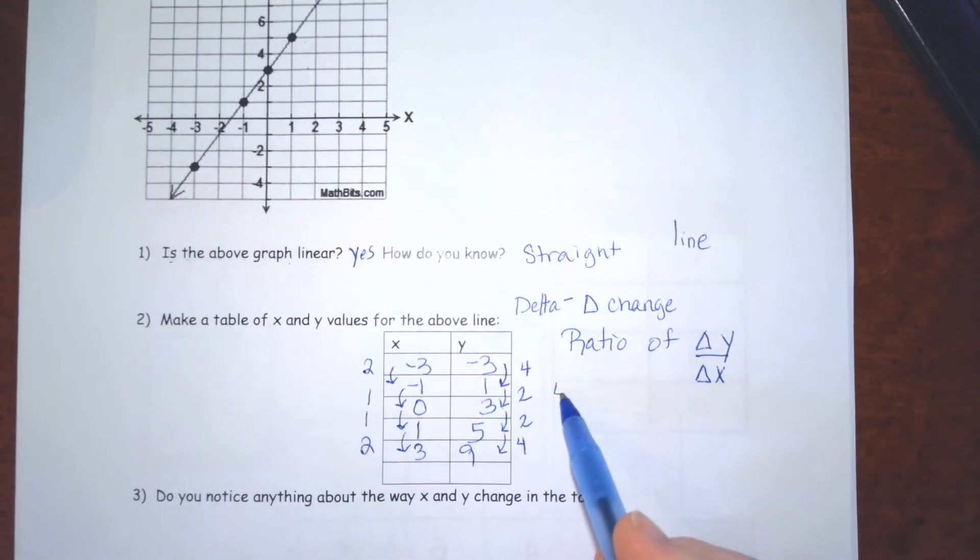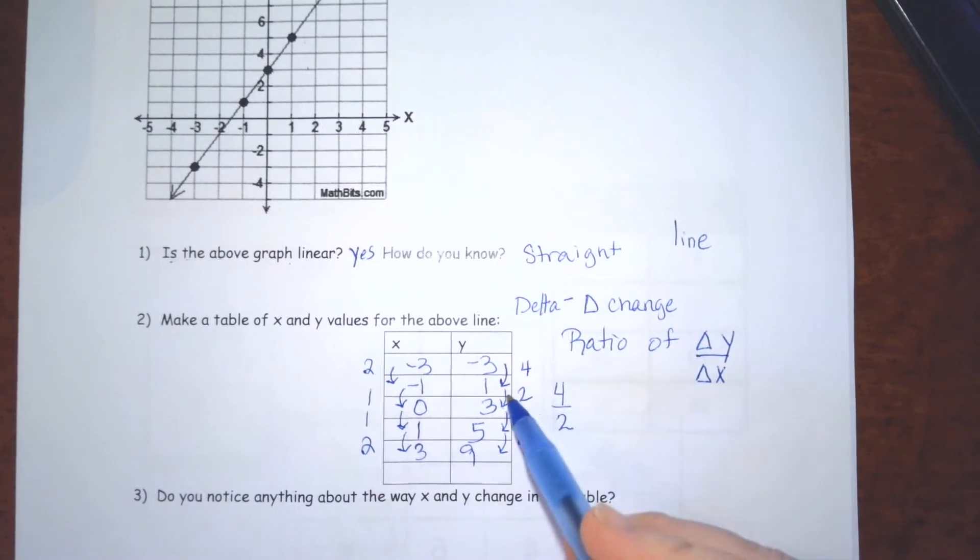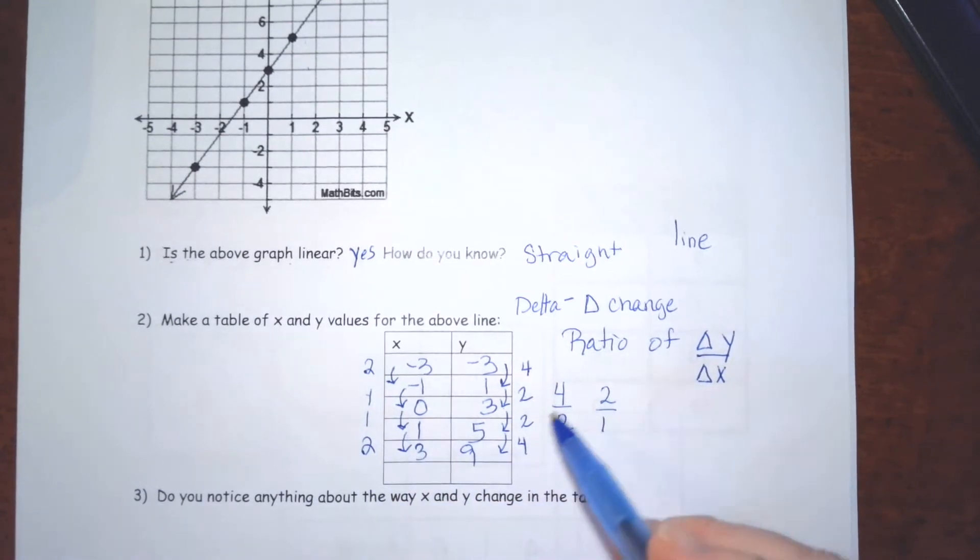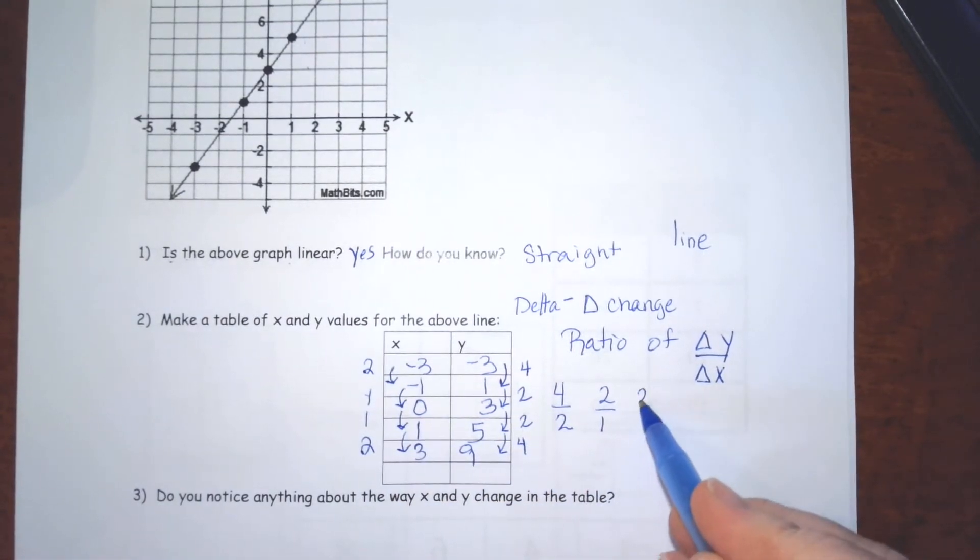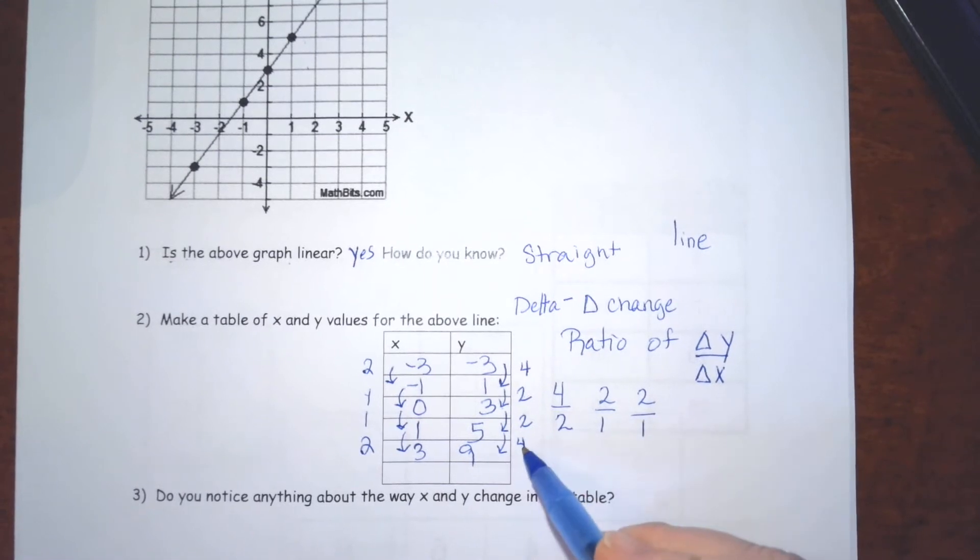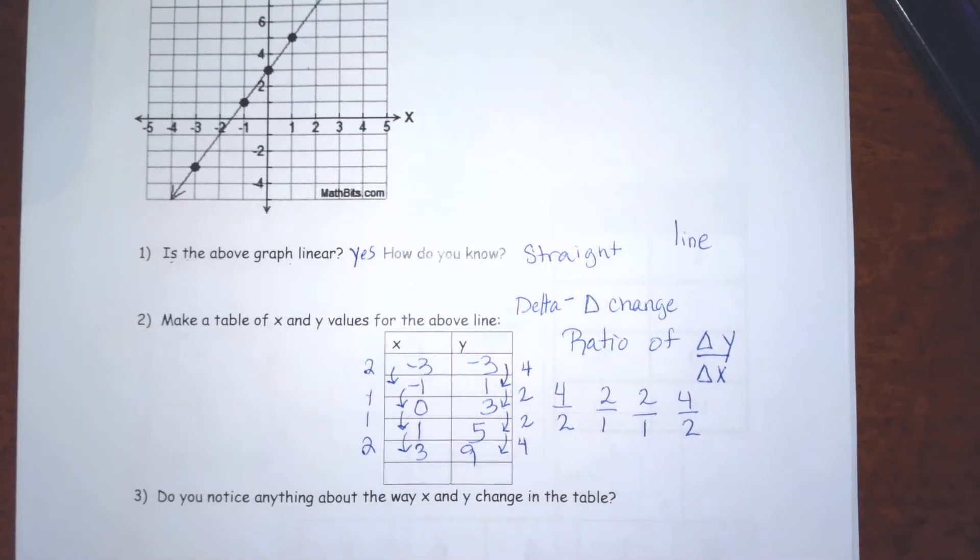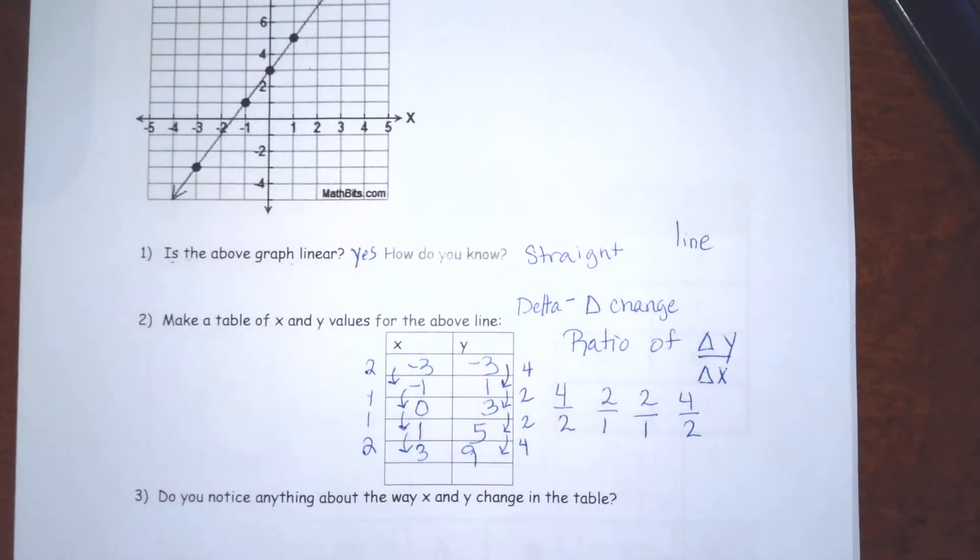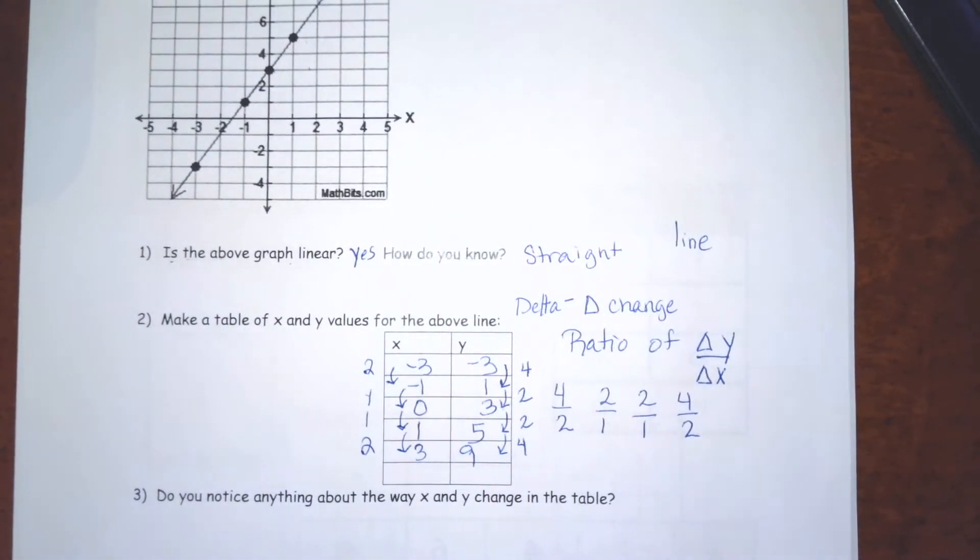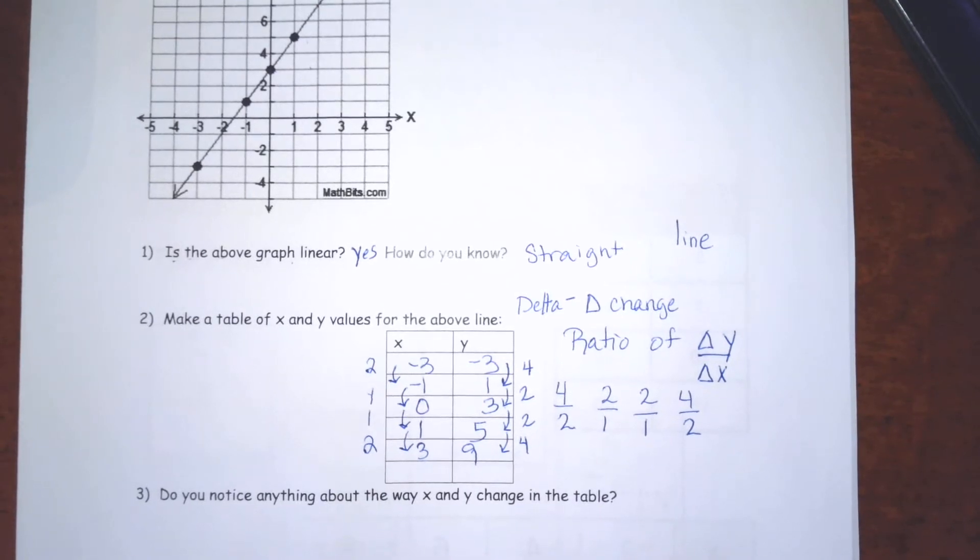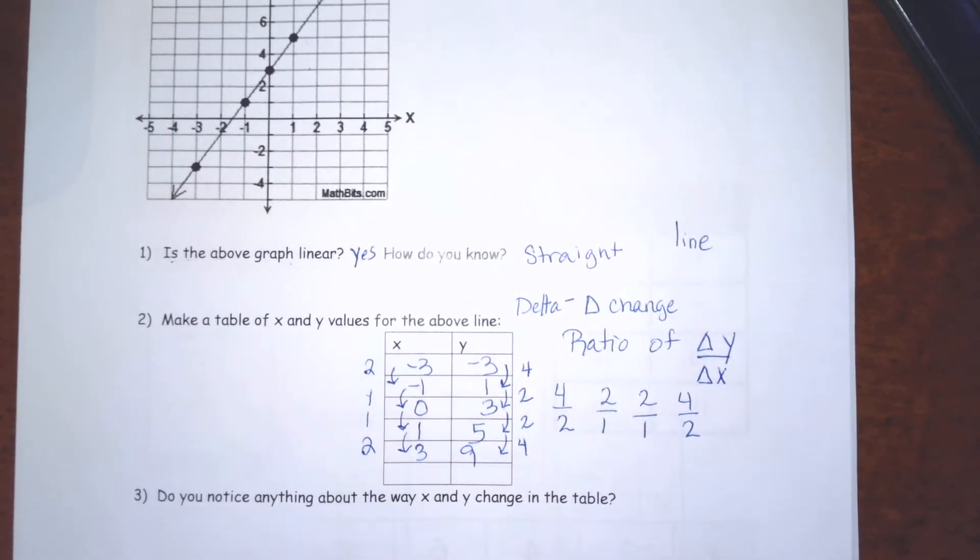The first time, y changed by 4 and x changed by 2. The next time, y changed by 2 and x changed by 1. The next time, 2 to 1. And the last time was 4 to 2. If these four ratios are the same, if they have the same value, then we have a constant rate of change.